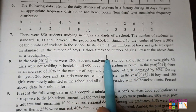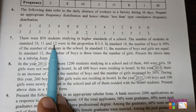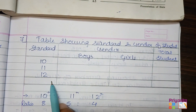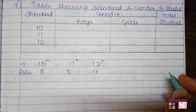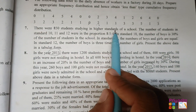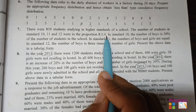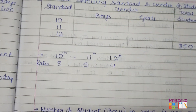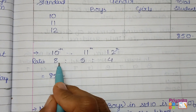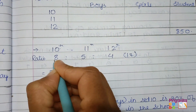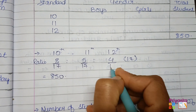Out of this information, first check how many attributes are given. One is the standard and the other is the proportion of boys and girls. Take the information in a table by putting the standard and the gender — boys and girls. First take the total number of students, that is 850. The ratio is 8:5:4, so 8 plus 5 plus 4 is 17. So the fractions are 8/17, 5/17, and 4/17.